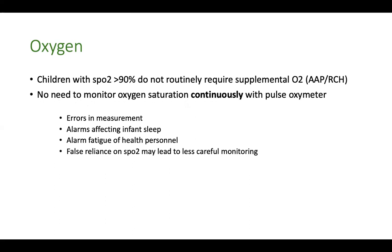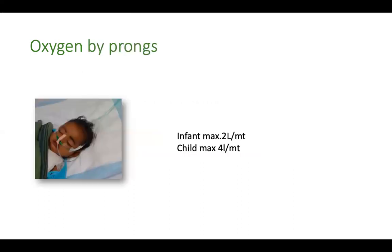When the patient is hypoxic, give oxygen and go for clinical monitoring — assessing whether the baby is feeding, whether respiratory distress has come down, grunting has subsided, and respiratory rate has decreased. Clinical assessment is more important than pulse oximeter values. Always start with oxygen by nasal prongs — maximum 2 liters per minute for an infant and maximum 4 liters per minute for a child, as this is the maximum air that can be humidified by the paranasal sinuses.